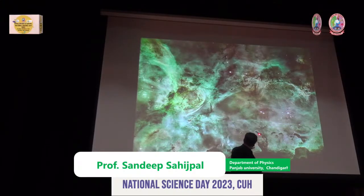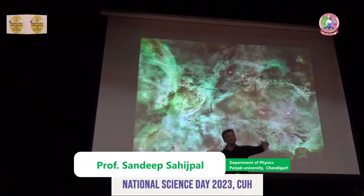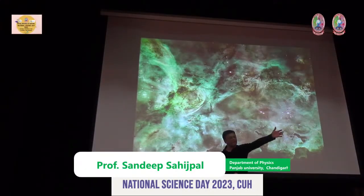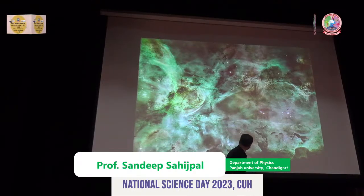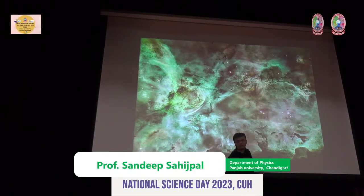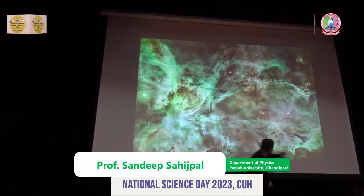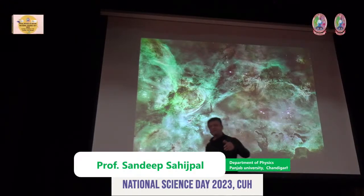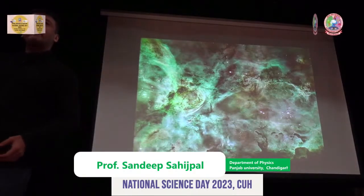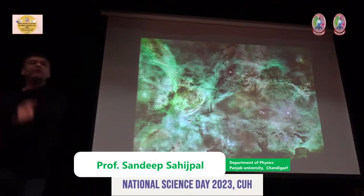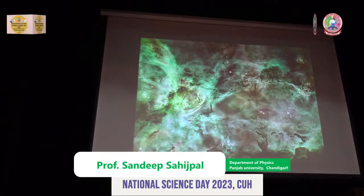If you wait and watch for a few million years — say we meet after four million years and take a photograph of such a region — you will see stars, and around those stars you will have planets that would have formed. And maybe after billions of years, some life will form there and they will have their own civilizations. This is how it works.